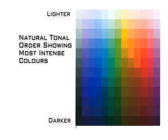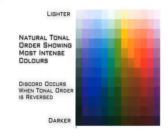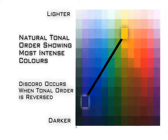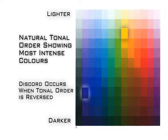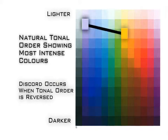A discord occurs when the natural tonal order of two colors is slightly reversed. You can see that yellow, at its most intense, is a lot lighter than blue-violet. In order to make a complementary discord, you're going to need to add a lot of white to the blue-violet in order to make it lighter than the yellow.